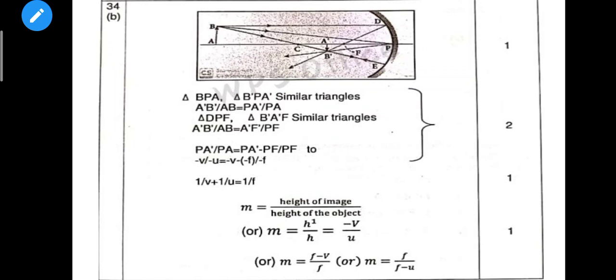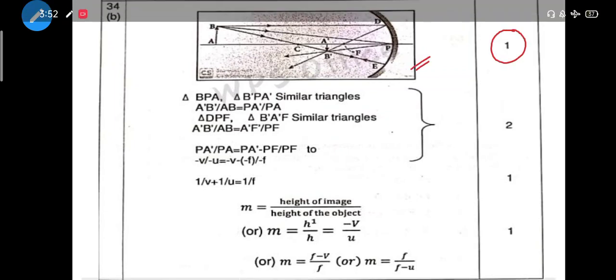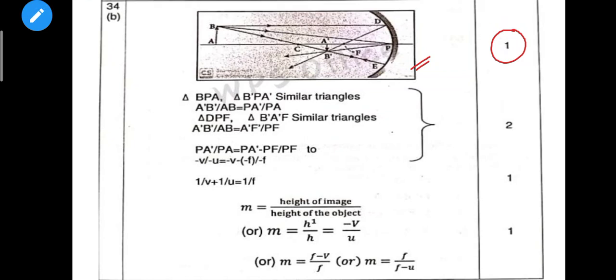Next question is the mirror equation, which is very important. The final equation is: 1/v + 1/u = 1/f. If you get all the equations leading to this, that final equation is your answer.